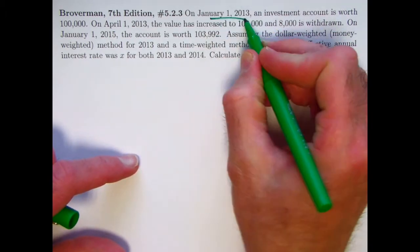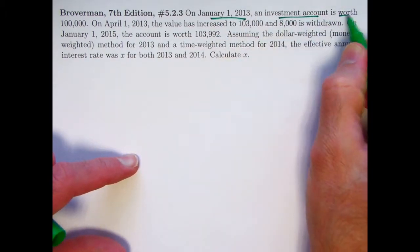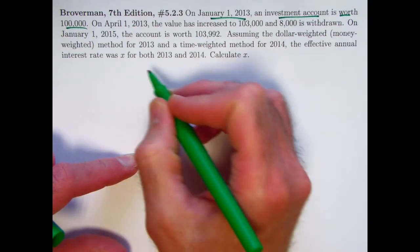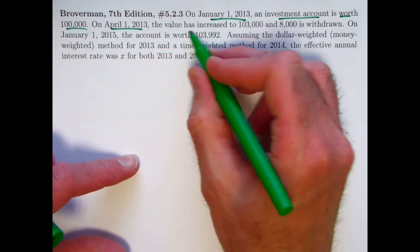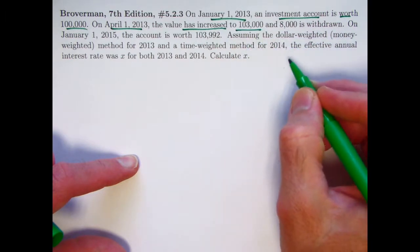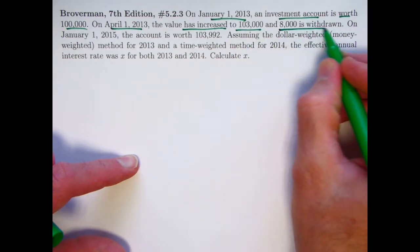On January 1st of 2013, an investment account is worth $100,000. Three months later, on April 1st, 2013, its value has increased to $103,000. And at that time, $8,000 is withdrawn.